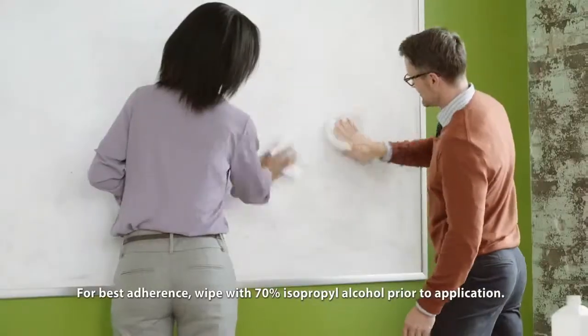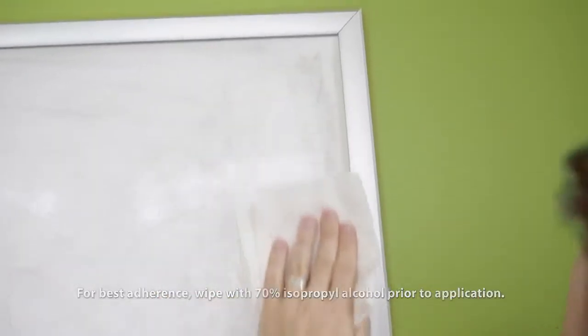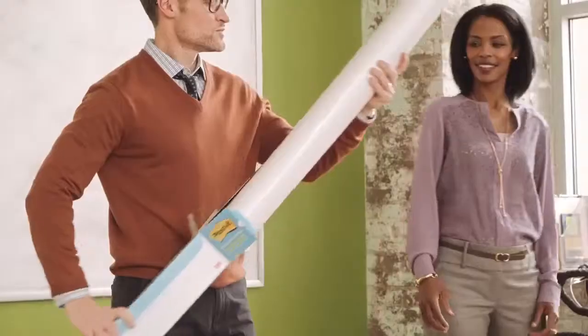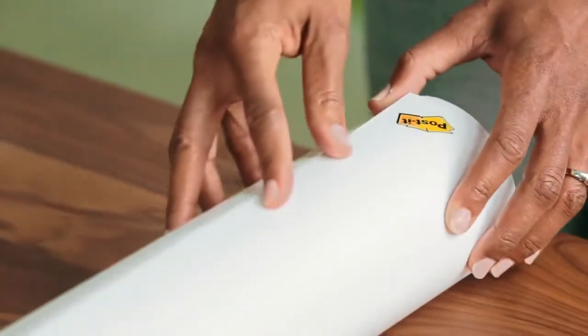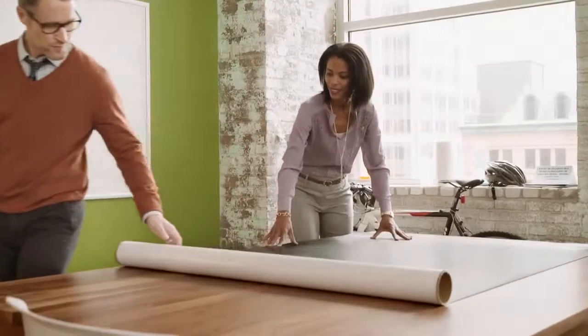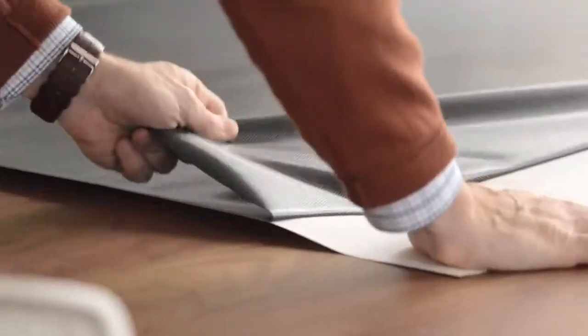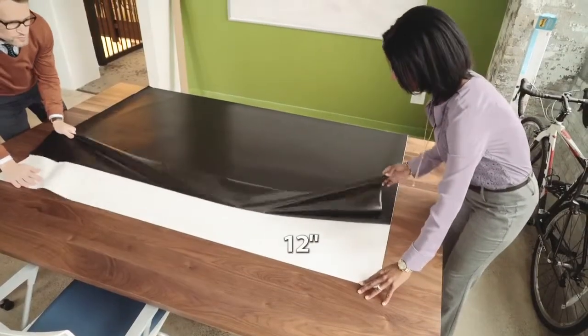Get started by cleaning and drying your existing whiteboard, removing any residue. Then unroll the Post-It dry erase surface on a flat, clean area and peel back 12 inches of the black liner from the top edge.